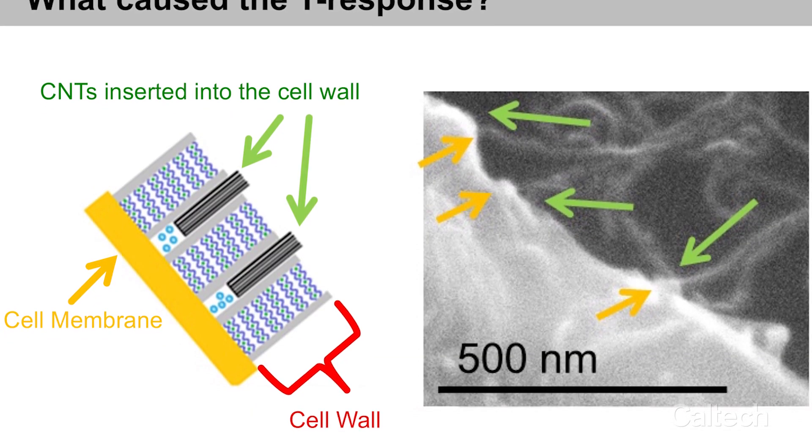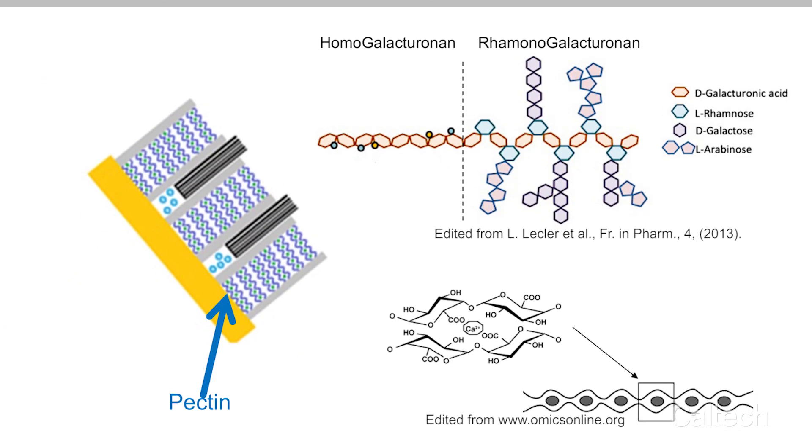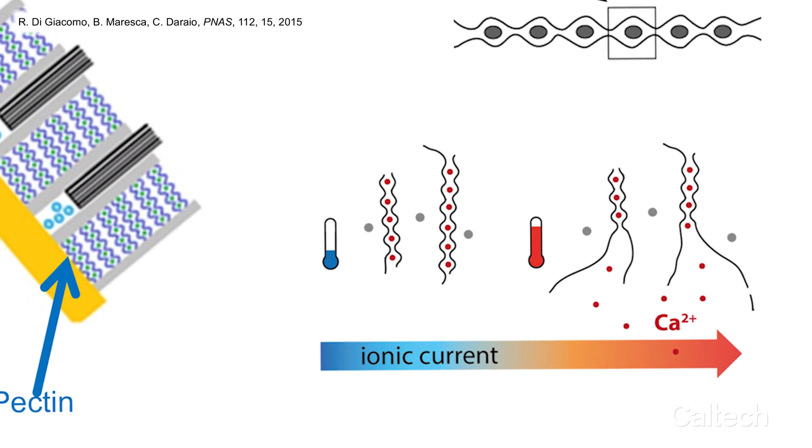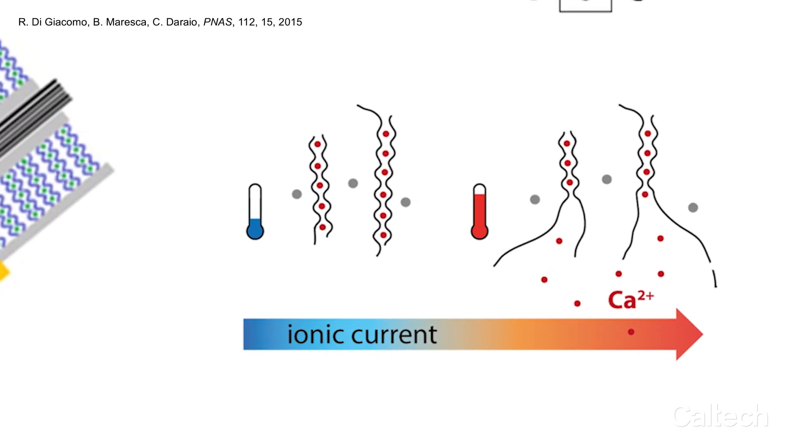Pectin is a double-stranded molecule and it contains calcium ions. As the temperature increases, these molecules in a way unzip like the zipper of a jacket, releasing ions or better yet, increasing their motility.